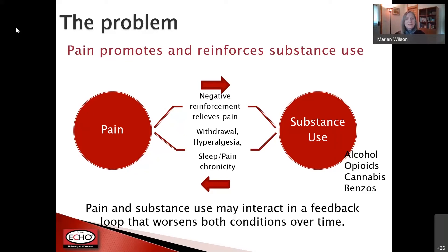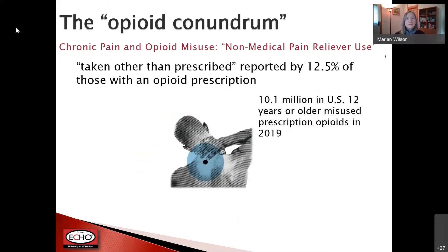When you have pain and substance use, they interact in a feedback loop that can actually worsen both conditions over time. As mentioned in the prior session, substance use can also cause pain or cause more symptoms — the withdrawal symptoms you might experience, the hyperalgesia or increased sensitivity to pain, and also chronicity of sleep and pain problems. So it's really a dysfunctional cycle that people can find themselves in.